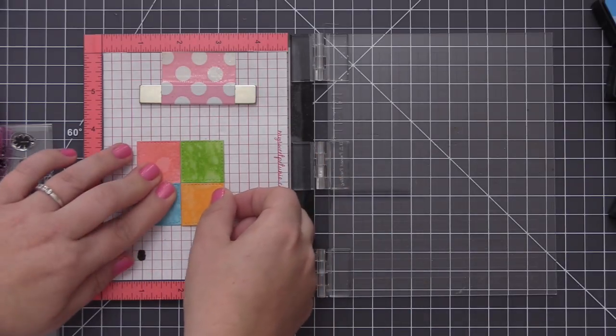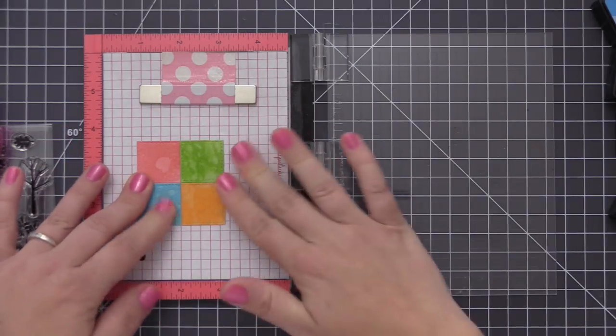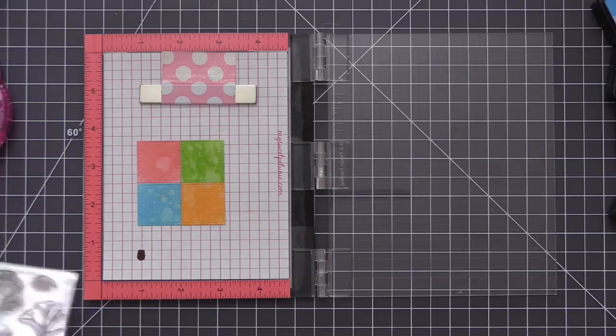So I have spring, summer, fall, and winter and I'm just adhering those all down and making sure that they're really nice and tight against each other so that when we do our stamping it's going to stamp nice and even on all four of the squares.